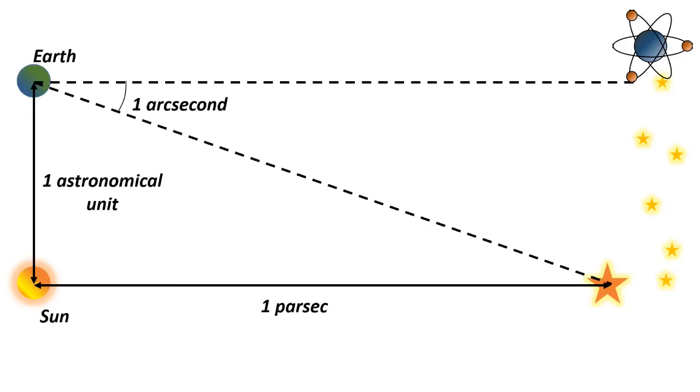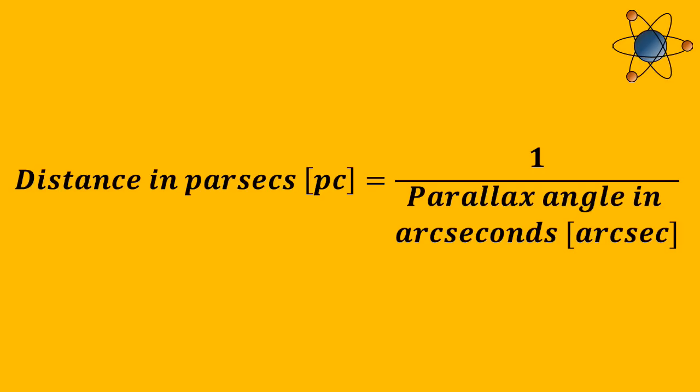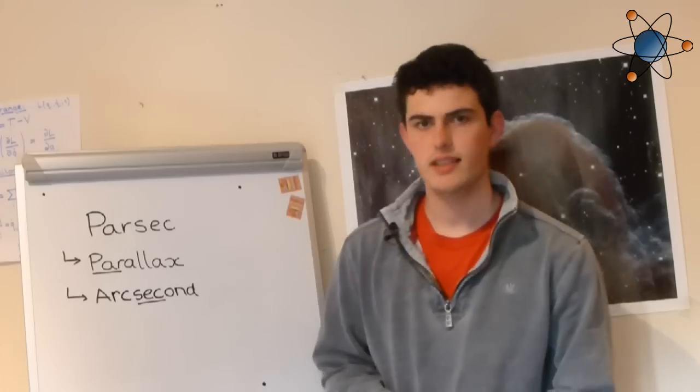So to measure the distance to a star in parsecs, we observe its parallax over half a year and then do 1 over the angle we find. So that's a parsec.